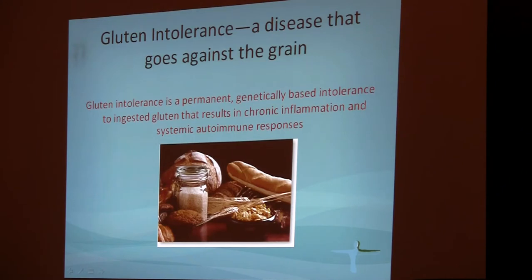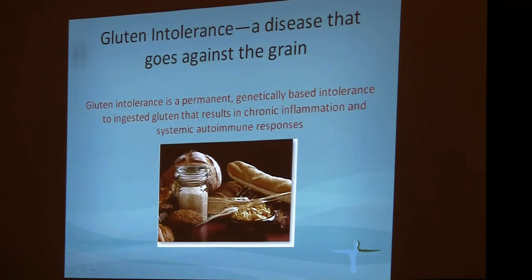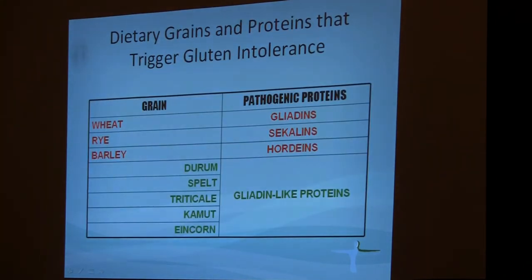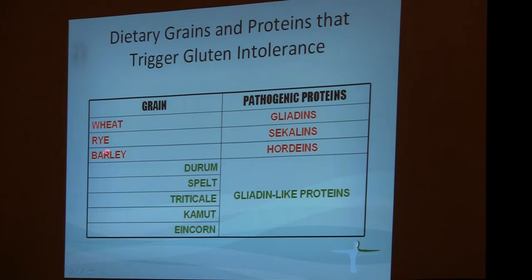Gluten intolerance is a disease of intolerance for specific grains — a disease which goes against the grain. By definition, it's a permanent, genetically-based intolerance to ingesting gluten that results in chronic inflammation and various systemic autoimmune responses. This table shows which grains cannot be consumed by patients who have gluten intolerance. There are three main grains: wheat, rye, and barley.